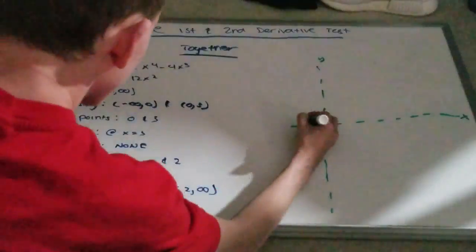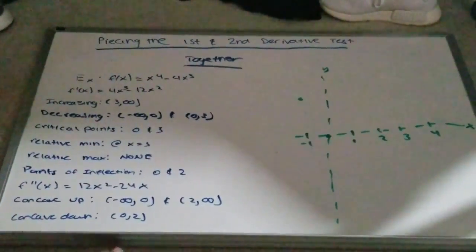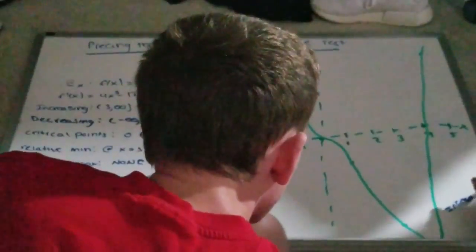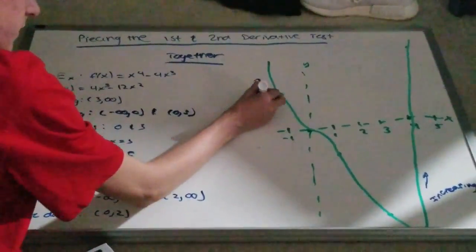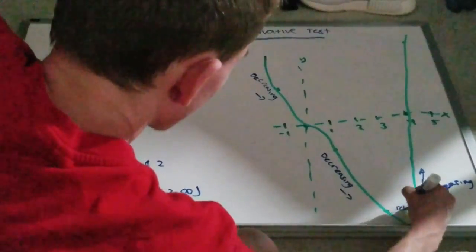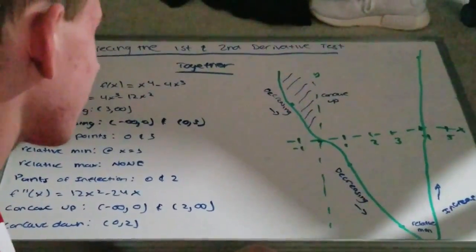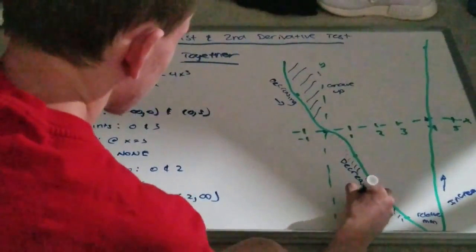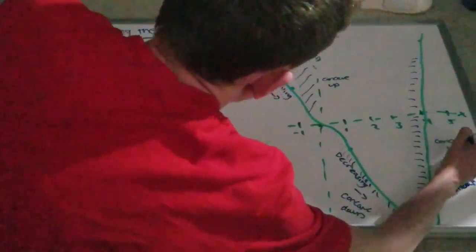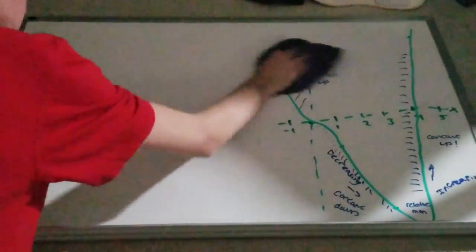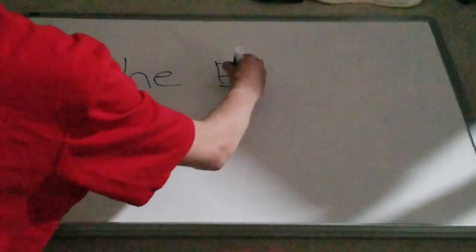Here's a graph of the function showing both where it is increasing and decreasing, and where it is concave up and concave down. This concludes the video of the first and second derivative test.